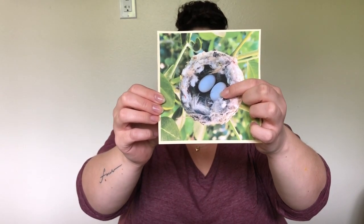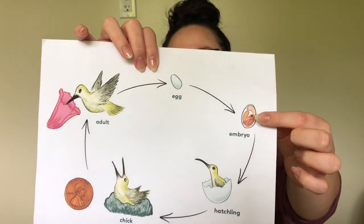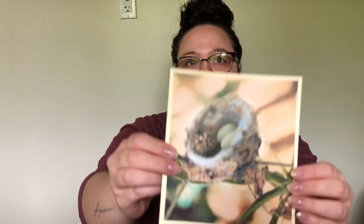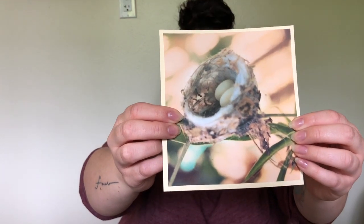The egg sits for 18 to 19 days — that's less than a month. The mom will sit on it and keep it warm, and that baby chick will grow inside. That's what's happening during those 18 days — the baby hummingbird is forming inside the egg. Here's another picture of a hummingbird's nest with two eggs. Did you know that the hummingbird lays the smallest eggs of any bird in the world? Pretty tiny!